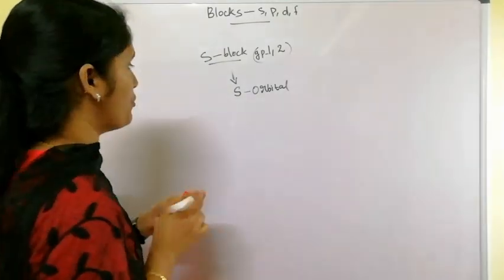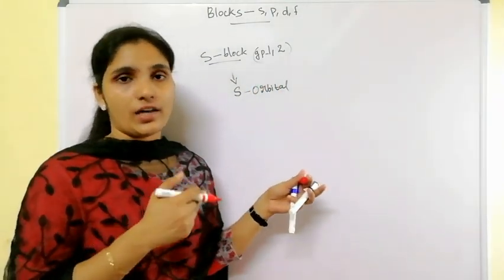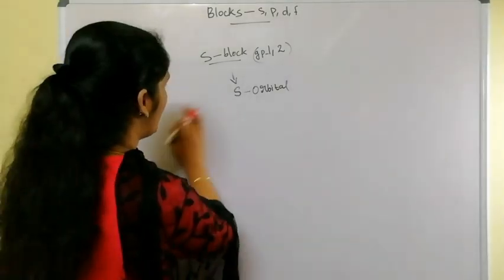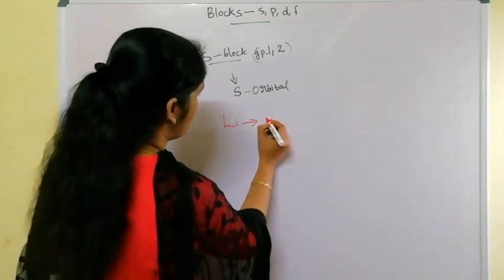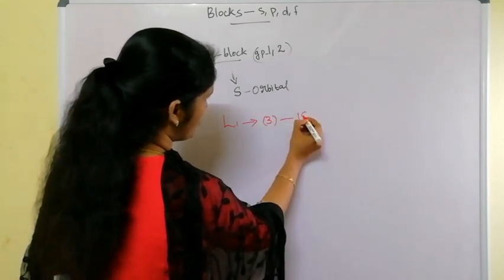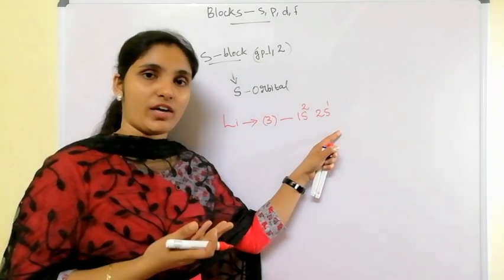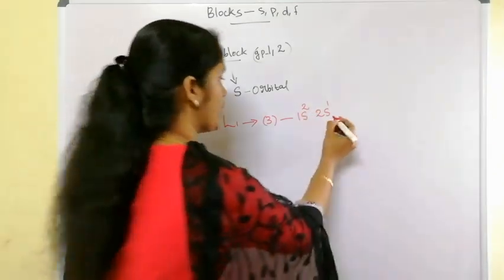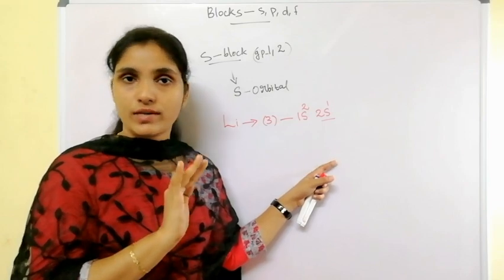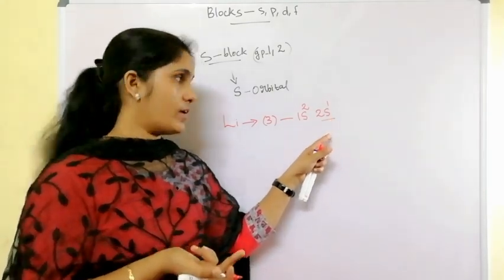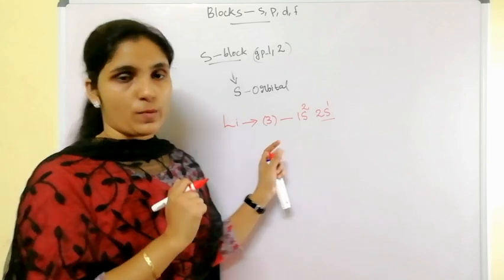Let's look at some examples. Group 1 elements are alkali metals and group 2 are alkaline earth metals — both are s-block elements. Take lithium, the first member of the alkali metal family. Its atomic number is 3, so its electronic configuration is 1s² 2s¹. The last electron enters the s orbital, so lithium belongs to the s-block.